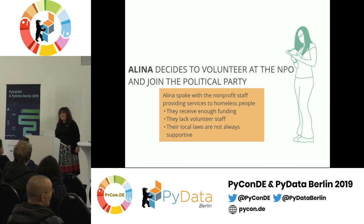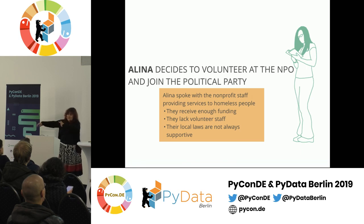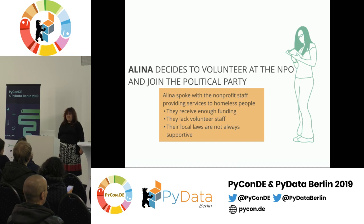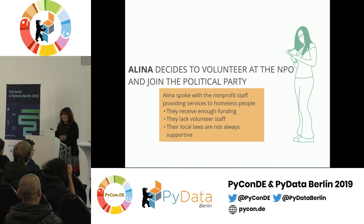Given all these options, Alina decides to do two things: she decides to volunteer at the nonprofit working with homeless people in Berlin, and to join a political party. Why? She spoke with the nonprofit staff and they told her they receive enough funding for their operations, but they're really short on volunteer staff to carry out specific support tasks. And the local laws in Berlin are not always supportive of their work, so they'd like to have some changes — that's why she decided these two directions may be worthwhile.